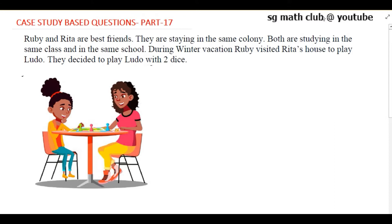Hello everyone. In today's video we will be doing a case study based question from the chapter probability for class 10. Ruby and Rita are best friends. They are staying in the same colony, both studying in the same class and in the same school. During winter vacation, Ruby visited Rita's house to play Ludo. They decided to play Ludo with 2 dice.